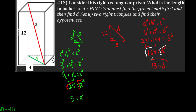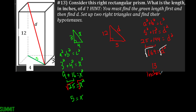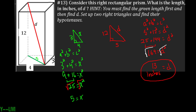So 13 inches is equal to that diagonal length D. Make sure you're setting up your right triangles and using the Pythagorean theorem to solve for the missing side.